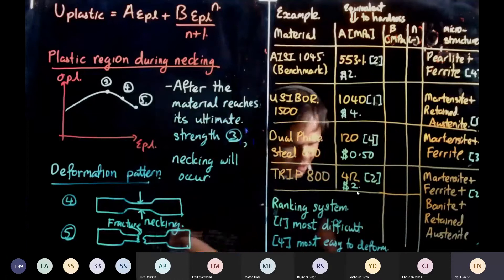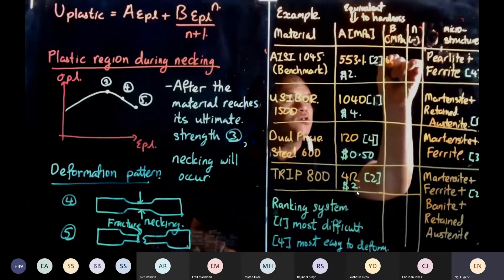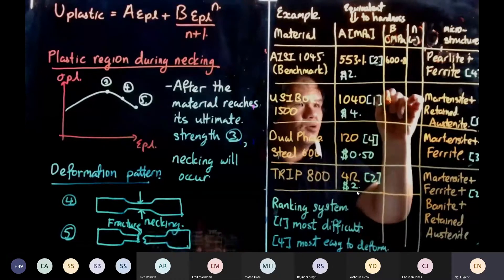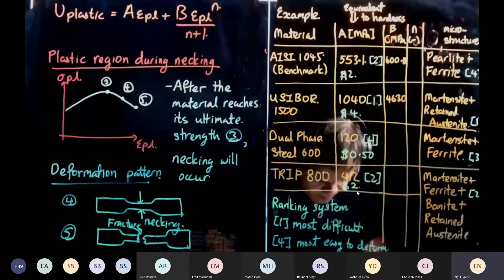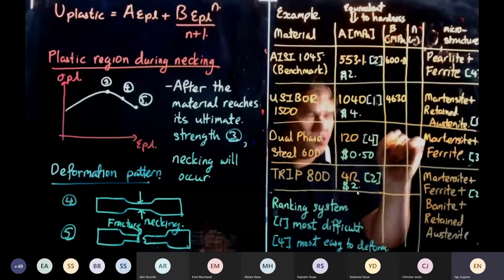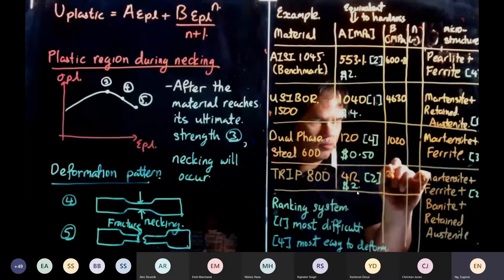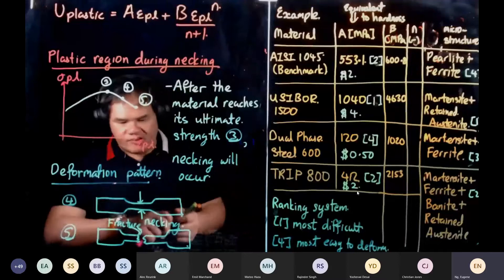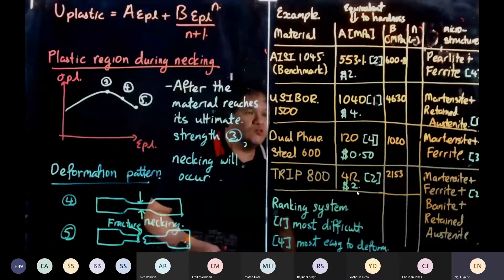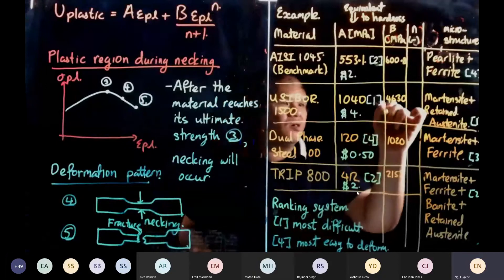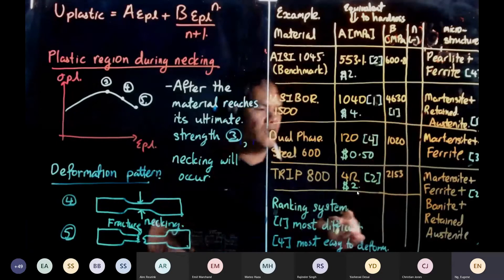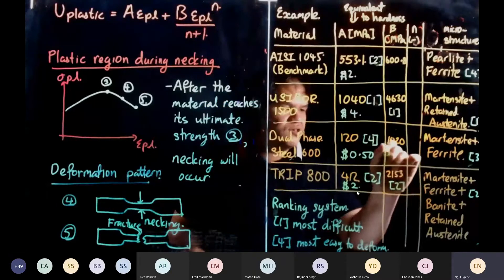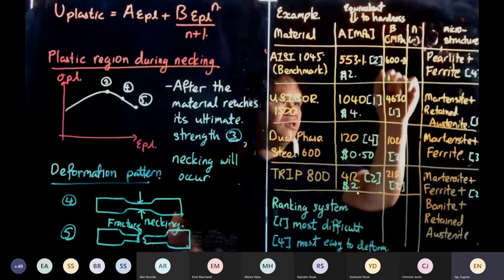Now I'll give you the next numbers. This is 600.8, this is 463.0, this is 1020, and this is 2153. Once you come into the manufacturing context, this is still my number one, this becomes my number two, this is my number three, and this is my number four.